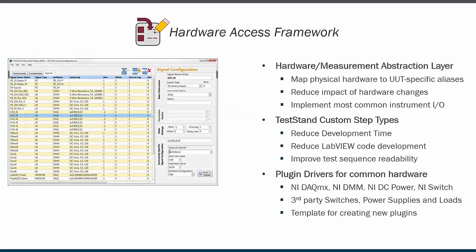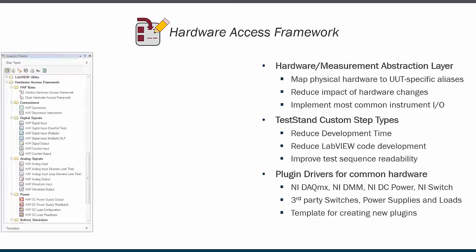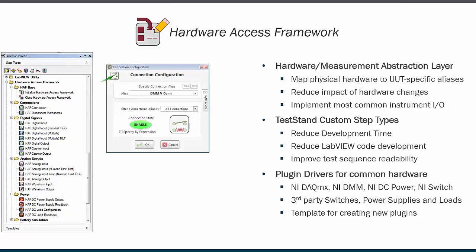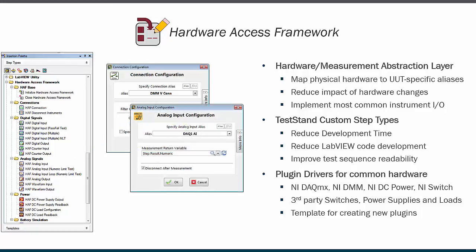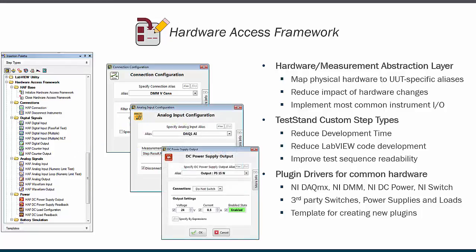The hardware access framework is a hardware and measurement abstraction layer for NI Test Stand. The HAF links hardware configuration information to human-readable signal aliases using a channel configuration file. It then provides Test Stand step types or actions — like make connection, read analog input, or configure power supply — that directly link to the configuration file to allow sequences to be developed from the point of view of the unit under test rather than the instrumentation.